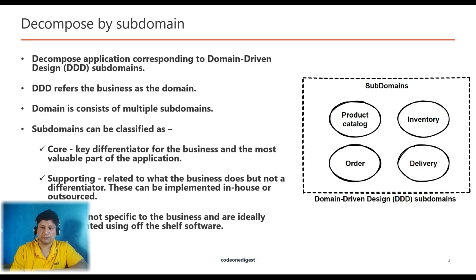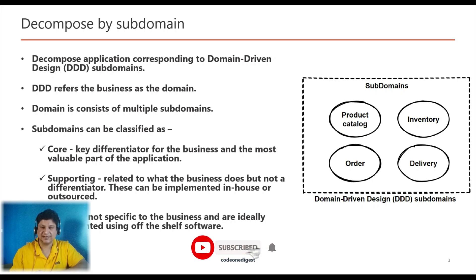A supporting subdomain can be implemented in-house or outsourced. Then you have a generic subdomain, which is not specific to the business and is ideally implemented using off-the-shelf software. DDD increases collaboration between large technology teams by creating a common language around changing business rules. In simple terms, DDD solves complex problems by breaking them into smaller parts. A complex domain may contain subdomains, and some subdomains can combine and group together for common rules and responsibilities — we call this group of subdomains a bounded context.